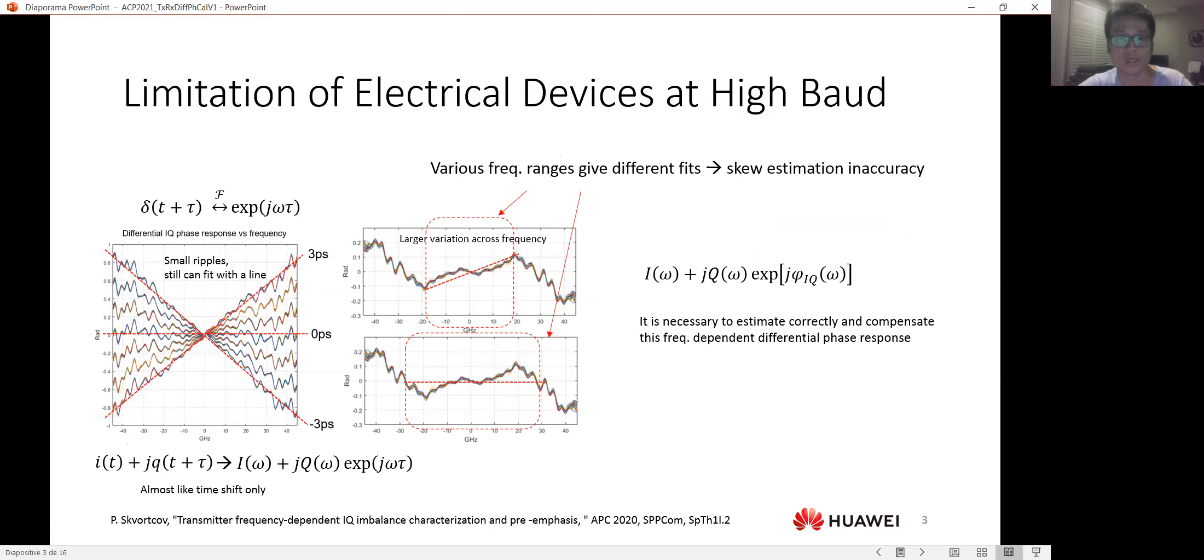As the baud rate is going up, we are facing the limitation of the electrical devices. If we are still very lucky, we may just see small ripples of the differential phase across the frequency, and we can just do a linear curve fitting and extract the slope as our skew value.